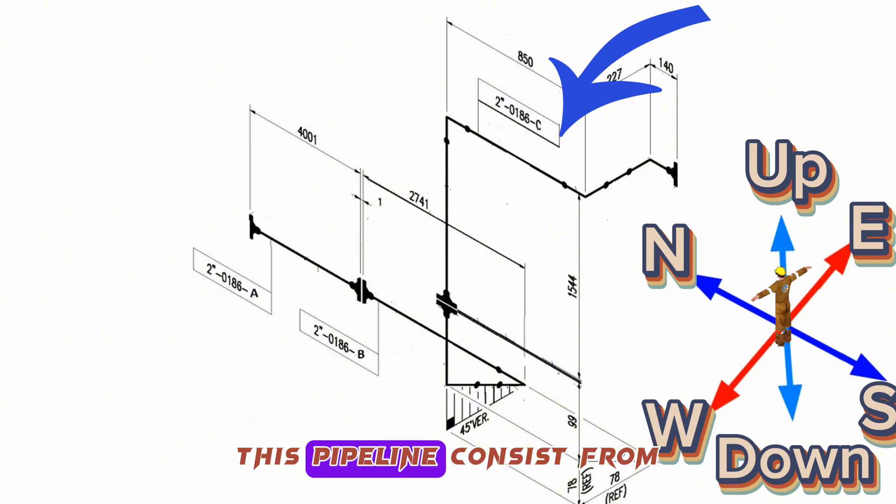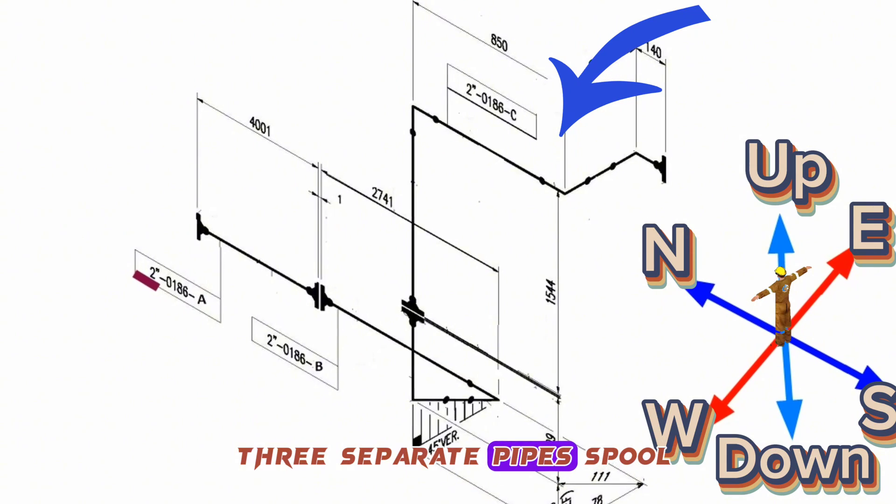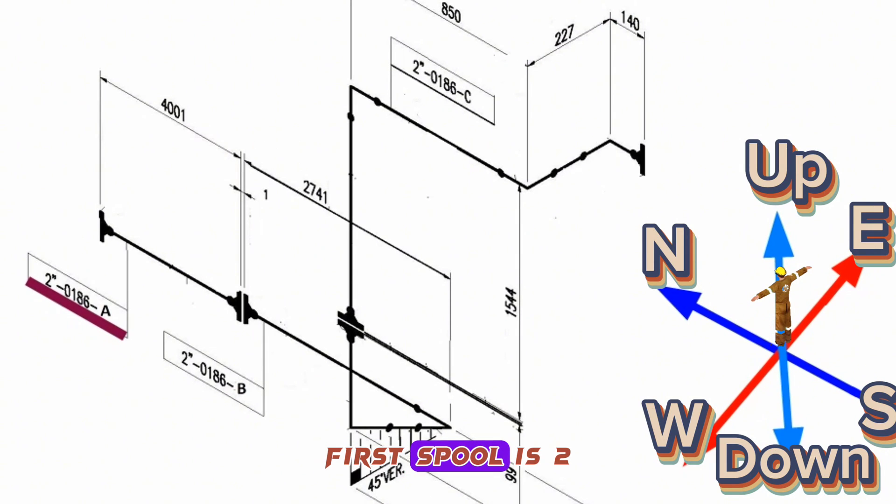This pipeline consists of three separate pipe spools. First spool is 2-inch 0186A, a length 4001 millimeters. Second spool is 2-inch 0186A, a length 2741 millimeters. Third spool is 2-inch 0186A, a length 850 millimeters.